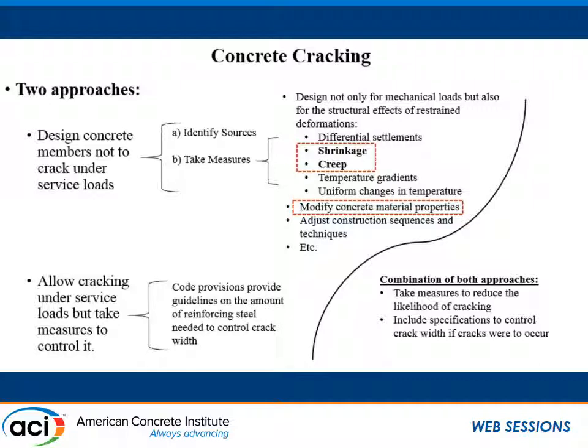A third approach might combine both of these two approaches — taking measures to reduce the likelihood of cracking but also including specifications to control crack widths if cracks were to occur. My presentation today is going to focus on the potential of differential shrinkage and shrinkage-induced creep on a composite bridge system, how they can cause cracking in bridges, how we can calculate the stresses created as a result of these time-dependent effects, and what we can do to alleviate the stresses.